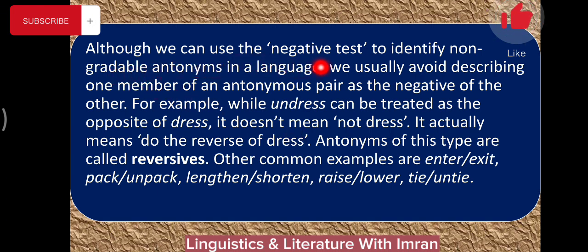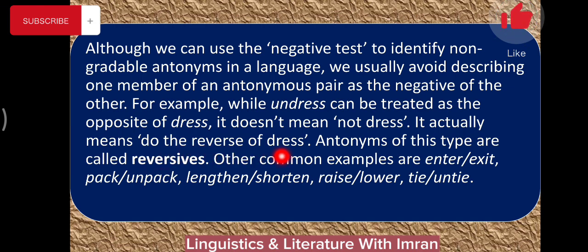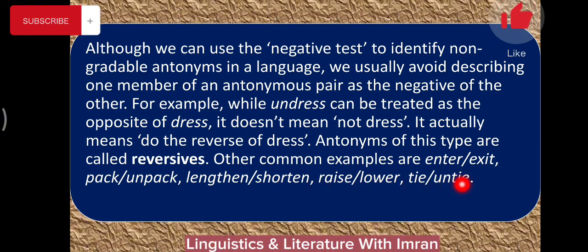Although we can use the negative test to identify non-gradable antonyms, we usually avoid describing one member of an antonymous pair as simply the negative of the other. For example, 'undress' can be treated as the opposite of 'dress', but it doesn't mean 'non-dress' — it means to do the reverse of dressing. Antonyms of this type are called reversives. Other common examples are enter and exit, pack and unpack, lengthen and shorten, and raise and lower.